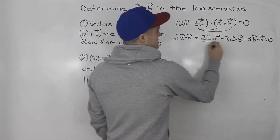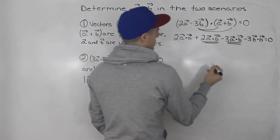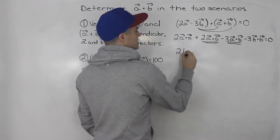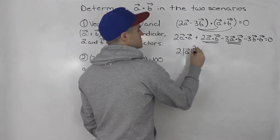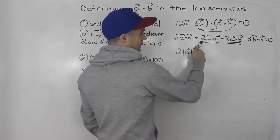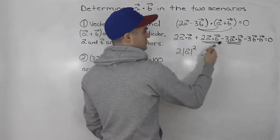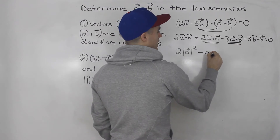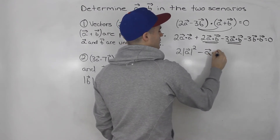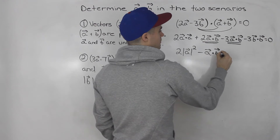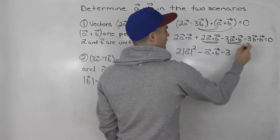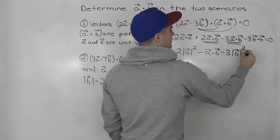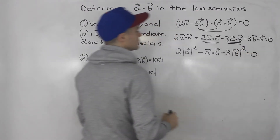Notice that the two a dot b terms are like terms. Also notice that a dot a is just the magnitude of a squared. The two like terms 2 minus 3 give negative 1, so we have negative a dot b. And b dot b is just the magnitude of b squared. That all equals zero.